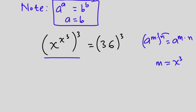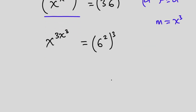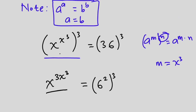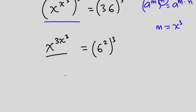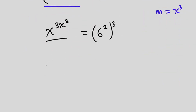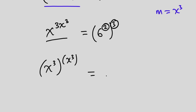We're going to be multiplying the whole exponent by 3. So we're going to have x to the power 3 times x to the third power, which is equal to 36 cubed — the same as 6 squared to the third power. Now you can see that what we have here is of the form a to the power a. To make it look clear, let's put them into parentheses: we have x to the third power, to the power x to the third power, and on the right side we're going to have 6 to the power 6.